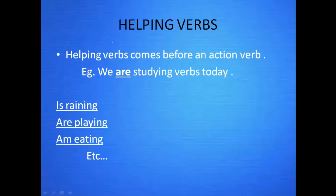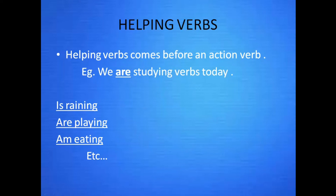The next type of verb is the helping verb. The helping verb always comes before an action verb. For example: We are studying verbs today — studying is the action verb. The helping verb comes before the action verb and helps form a meaningful sentence. Examples: is raining, are playing, am eating.